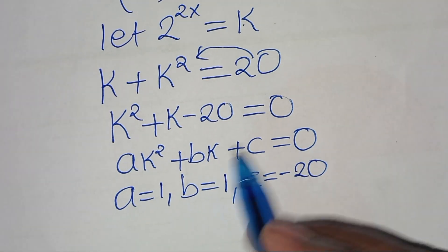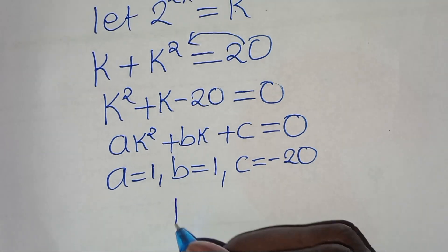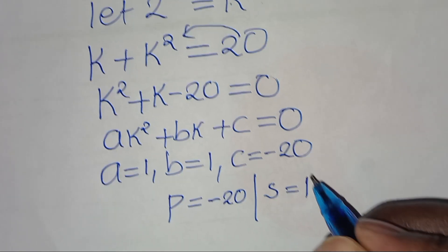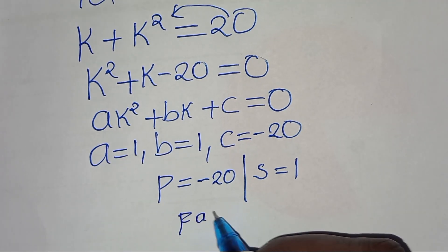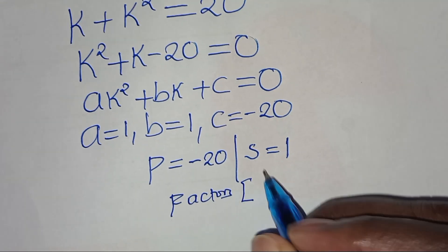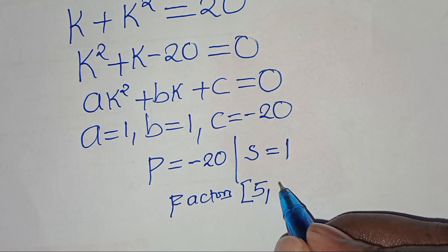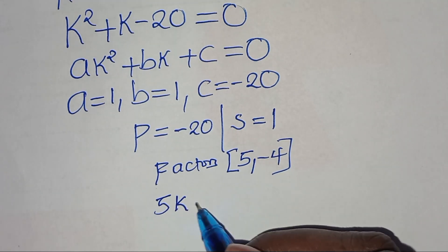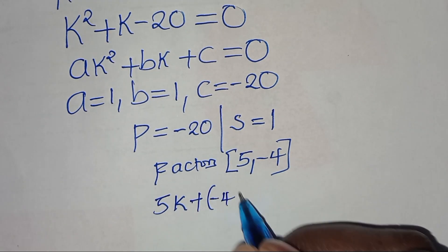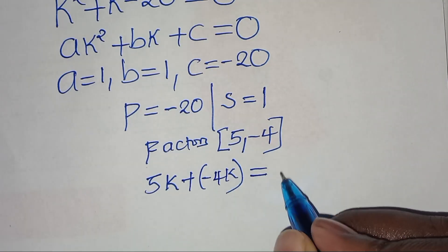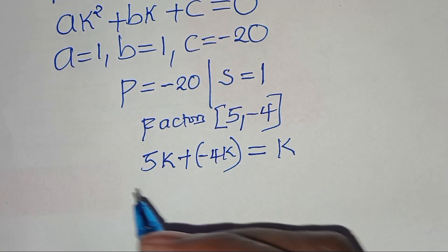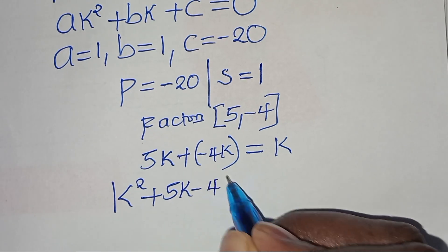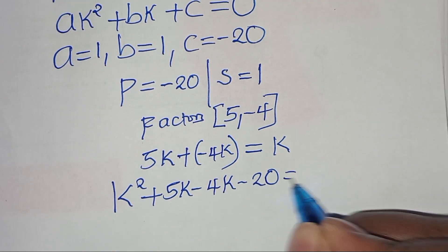We can solve this quadratic equation by factorization, such that the product is minus 20 and the sum is equal to 1. This implies we identify two factors: 5 and minus 4, such that 5k plus minus 4k gives us k. Substituting back to the equation, we have k squared plus 5k minus 4k minus 20, this is equal to 0.